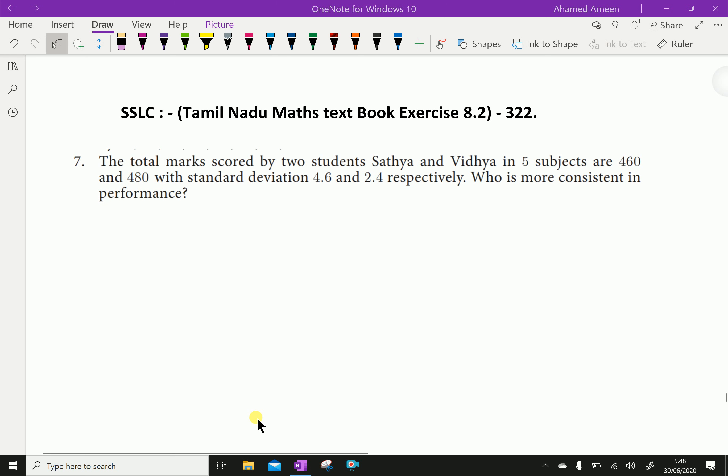Welcome to AminAcademy.com. Let us do Tamil Nadu SSLC Maths Textbook Exercise 8.2 Question Number 7. The total marks scored by two students Sathya and Vidya in five subjects are 460 and 480 with standard deviation of 4.6 and 2.4 respectively. Who is more consistent in performance? Let us do both students' courses separately.